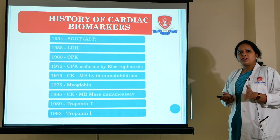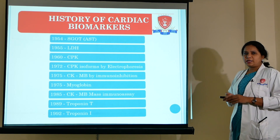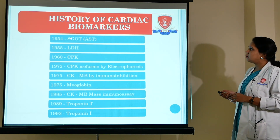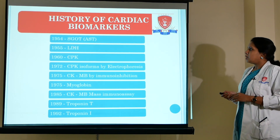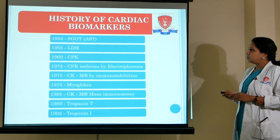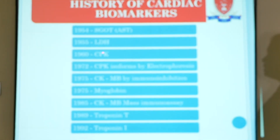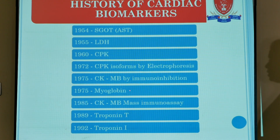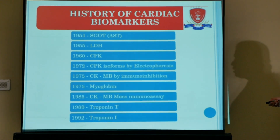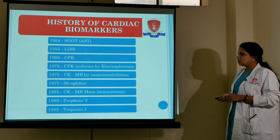Several cardiac markers have been identified. Starting from the original ones: SGOT, now known as aspartate transaminase; LDH (lactate dehydrogenase); CPK (creatine phosphokinase) and its isoenzyme forms; CKMB; myoglobin, a muscle protein; and two muscle proteins commonly used today — troponin T and troponin I.